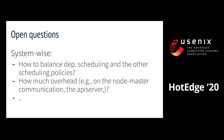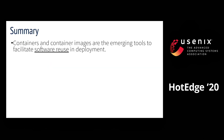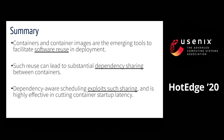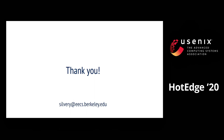More generally, we expect debates, arguments, and ideas surrounding container and Kubernetes technologies that are emerging at the edge. We look forward to discussion on what compute abstractions and frameworks are best suited for edge workloads. As a summary, containers and container images are emerging tools to facilitate software reuse in deployment including the edge. Such reuse can lead to substantial dependency sharing between containers, and dependency-aware scheduling can exploit such sharing. It is highly effective, as we show, at cutting container startup latency. With that, I conclude the talk. Thank you.